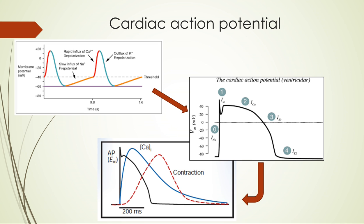Excitation-contraction coupling in cardiac muscle is a bit different from skeletal muscle, where action potential comes from the neuromuscular junction and excites a muscle via the mechanical coupling between DHPR and ryanodine receptor that we saw in the last video. In cardiac muscle, action potential is generated in the same tissue via the SA node. The SA node generates an action potential that is transmitted to the myocyte, and that action potential is responsible for contraction.